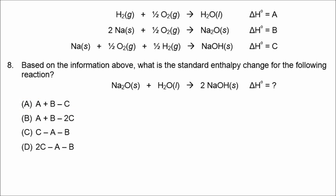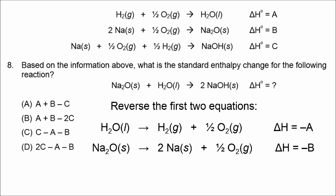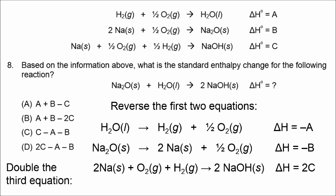Number 8 is a Hess's Law problem. The target equation needs 1 mol of sodium oxide on the left, 1 mol of liquid water on the left, and 2 mols of sodium hydroxide on the right. The first two equations must be reversed, giving delta H values of negative A and negative B. The third equation is doubled, giving delta H of 2C. Adding the equations, canceling sodium, oxygen, and hydrogen, the overall delta H equals 2C minus A minus B. The correct answer is D.